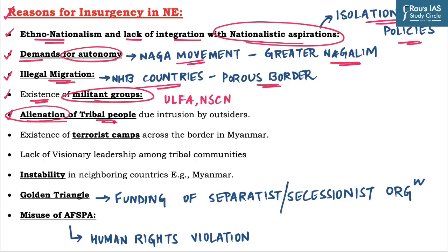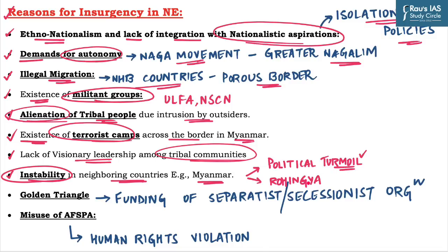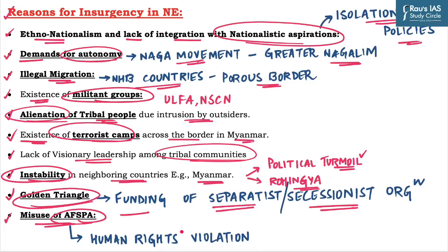Another reason is alienation of tribal people due to intrusion by outsiders, and the existence of terror camps across the border in Myanmar. There is also a lack of visionary leadership among tribal communities, leading to involvement in illegal activities. Instability in neighbouring countries like Myanmar — including political turmoil and the Rohingya issue — has caused many people to illegally migrate to the Indian side. The proximity to the Golden Triangle ensures funding of separatist organizations via illegal drug smuggling. Lastly, the misuse of AFSPA has led to alleged human rights violations, pushing some innocent people toward insurgent groups.